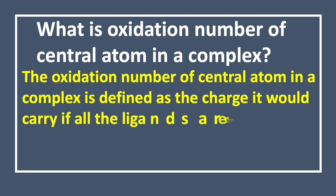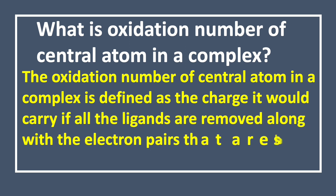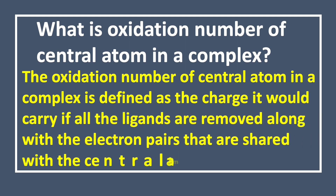First let us see what is oxidation number. The oxidation number of a central atom in a complex is defined as the charge it would carry if all the ligands are removed along with the electron pairs that are shared with the central atom.